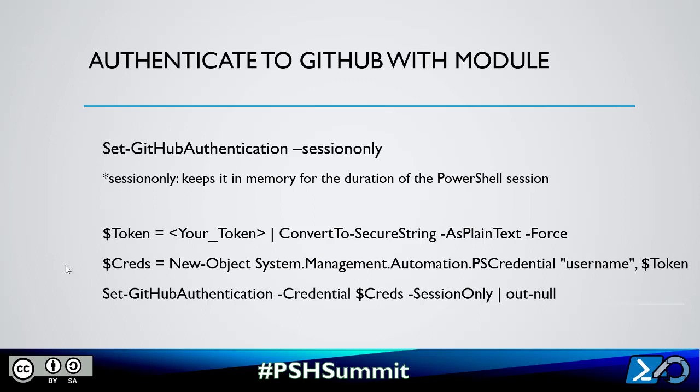To authenticate to GitHub with the module, there is a cmdlet called Set-GitHubAuthentication. Add the parameter -SessionOnly to keep the token in memory for the duration of the PowerShell session. When you use this cmdlet, it will open a prompt and ask you for your token. You can also automate — create an object and you will be able to authenticate your GitHub with the module.